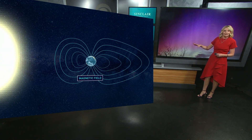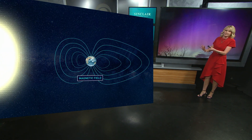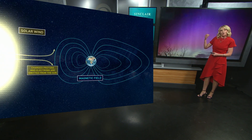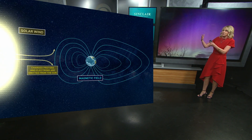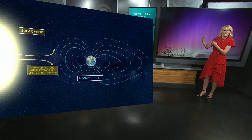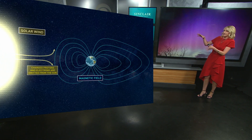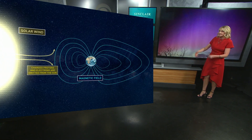The earth has a magnetic field around it which protects the earth quite a bit. The sun produces what are called sun storms or solar wind — it can be called both. Basically, that's charged protons and electrons that come out of the sun and get shot into space.